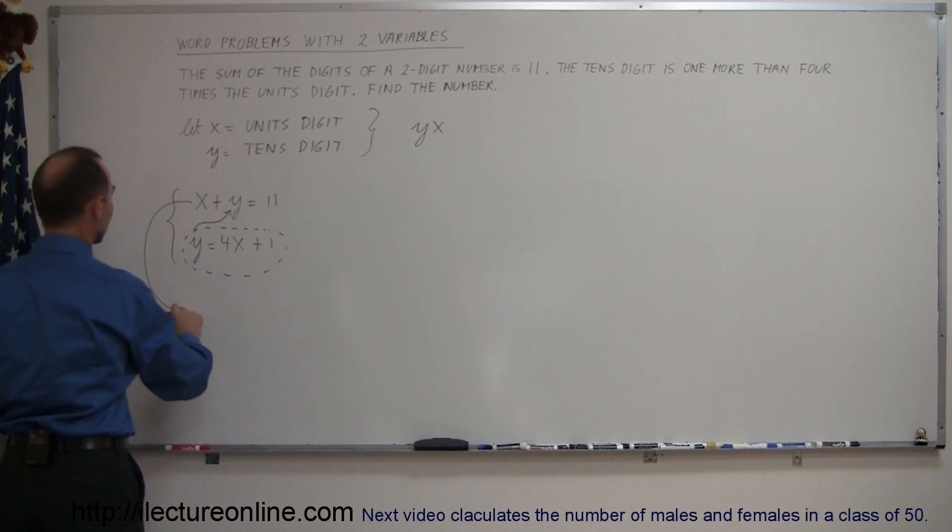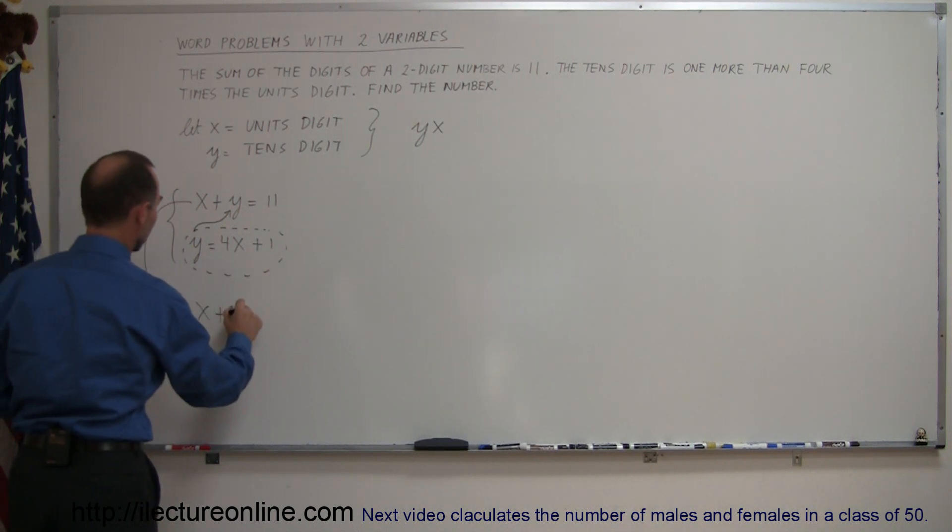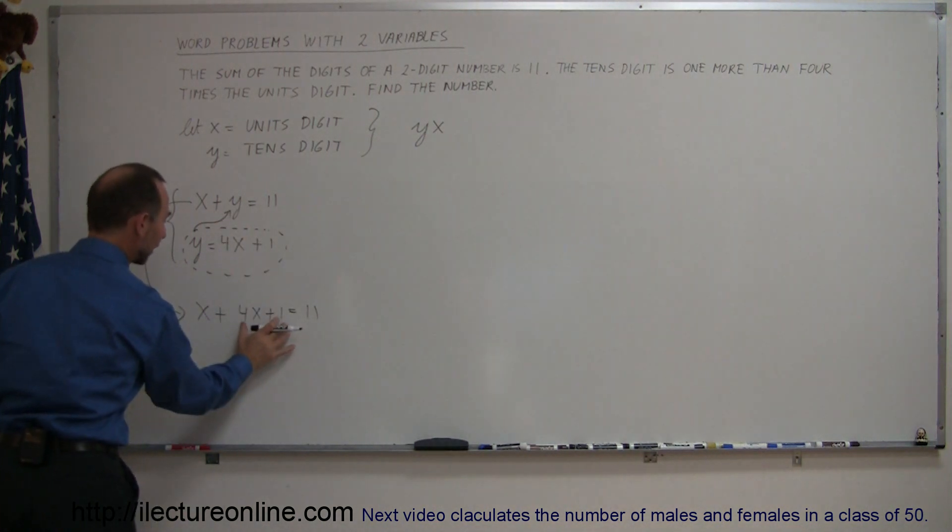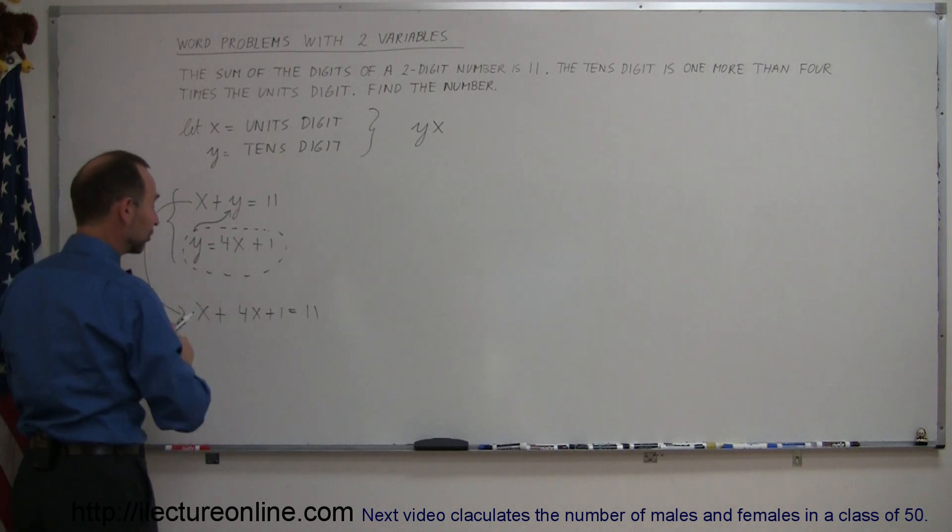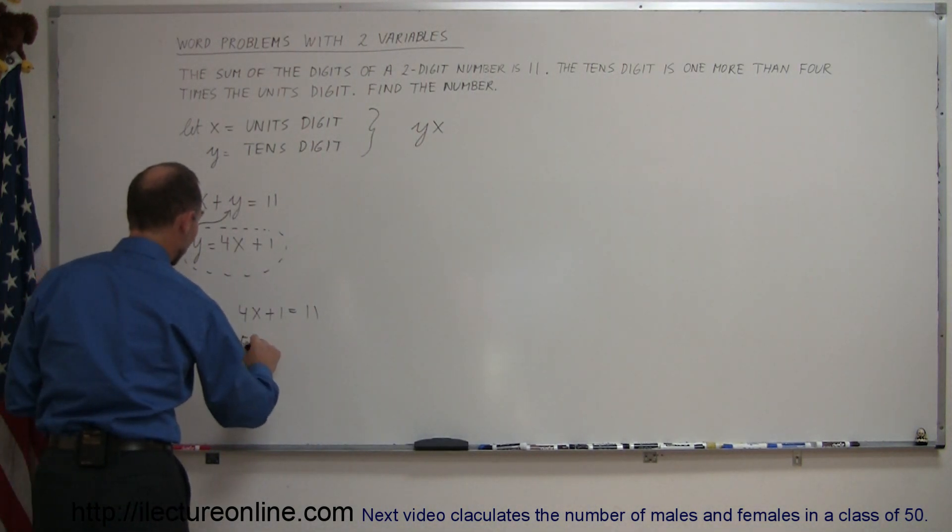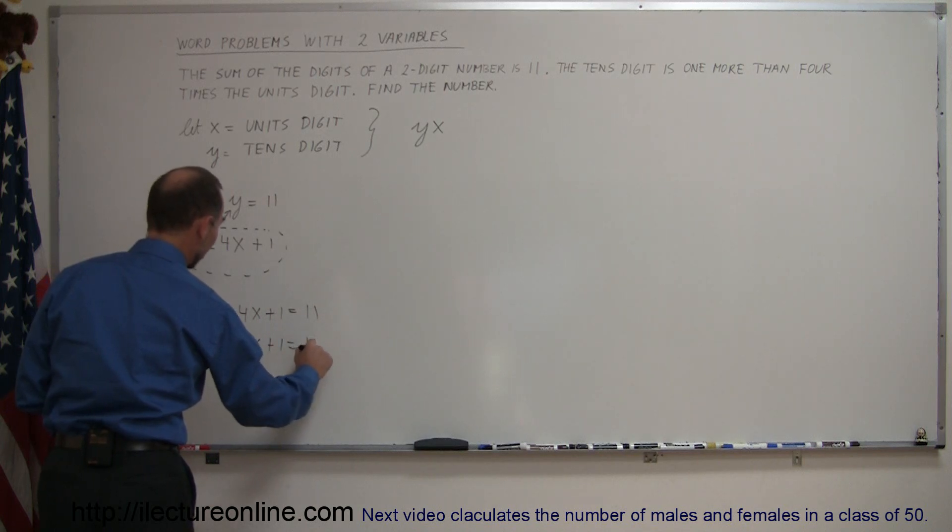When you do that, you get the following, you get x plus y being 4x plus 1 is equal to 11. Notice that y is now replaced by the 4x plus 1. And now you simply solve this equation for x. So this is equal to 5x plus 1 equals 11.